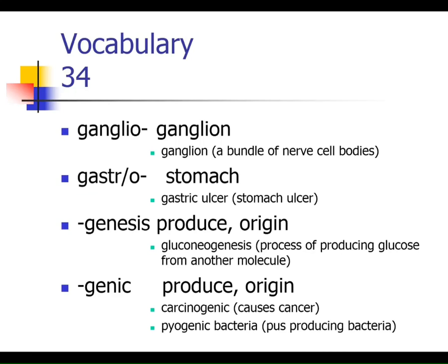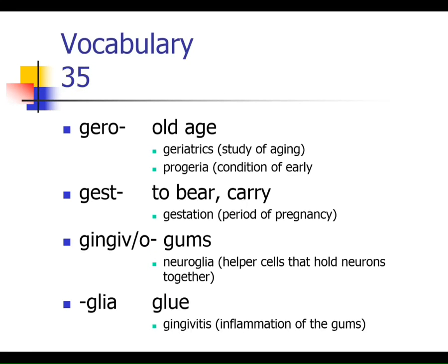You may have heard of progeria, a disease in which children age very, very early and can die of heart disease by age 12. 'Gest' means to carry or to bear — think gestation, during which time a woman is pregnant and carrying the baby. 'Gingivo' refers to your gums; gingivitis is inflammation of the gums. And 'glia' means glue. I know I have the examples flipped on those last two.